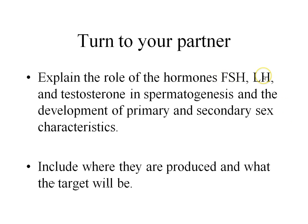To summarize: FSH and LH, produced by the anterior pituitary in response to GnRH from the hypothalamus, target the testes. FSH targets Sertoli cells to make sperm; LH targets Leydig cells to make testosterone. Testosterone encourages spermatogenesis and primary and secondary sex characteristics — testes and penis development, more hair, deeper voice, muscles.